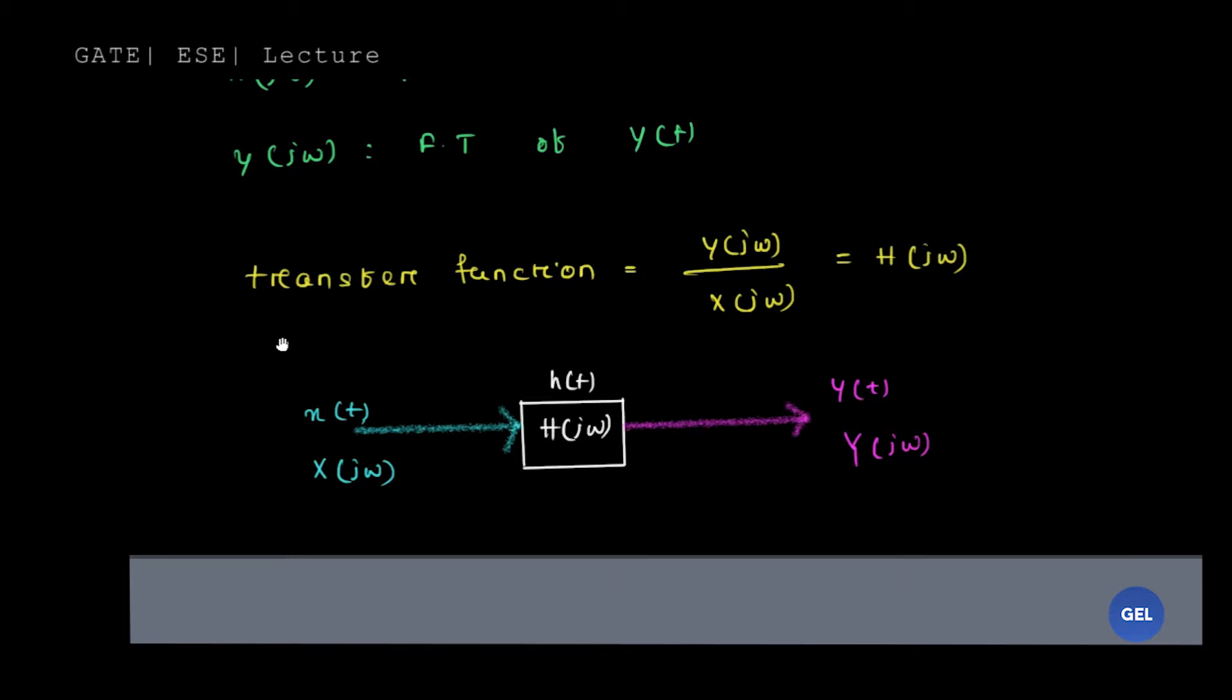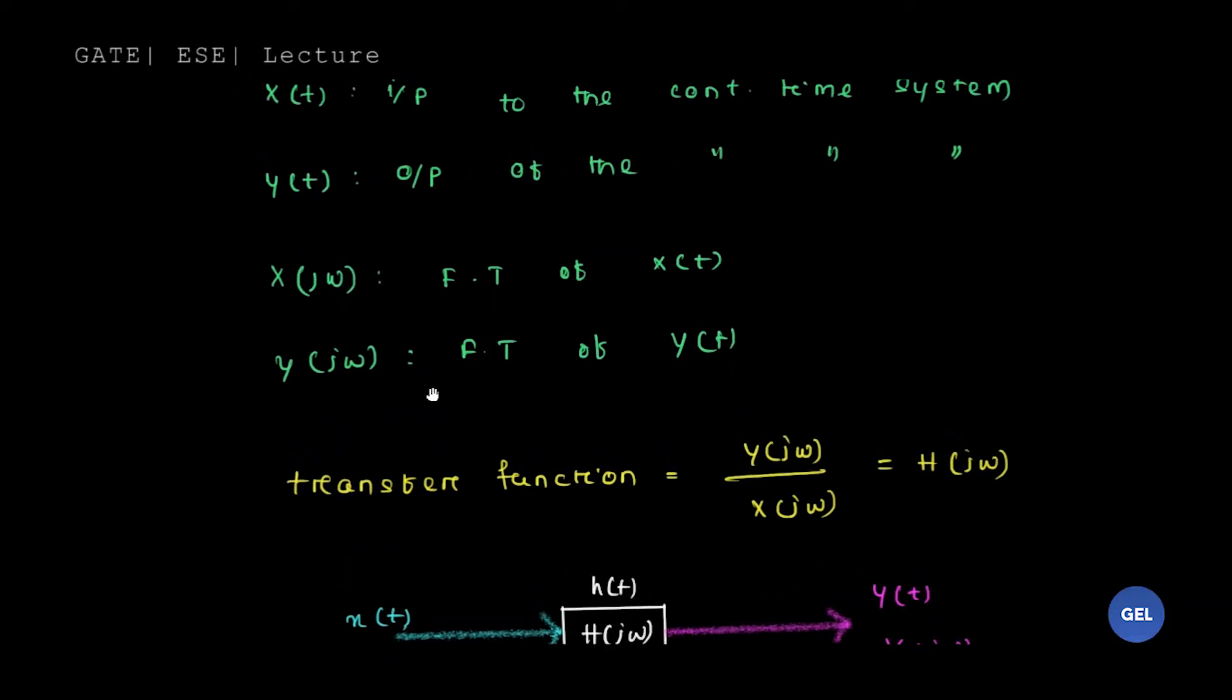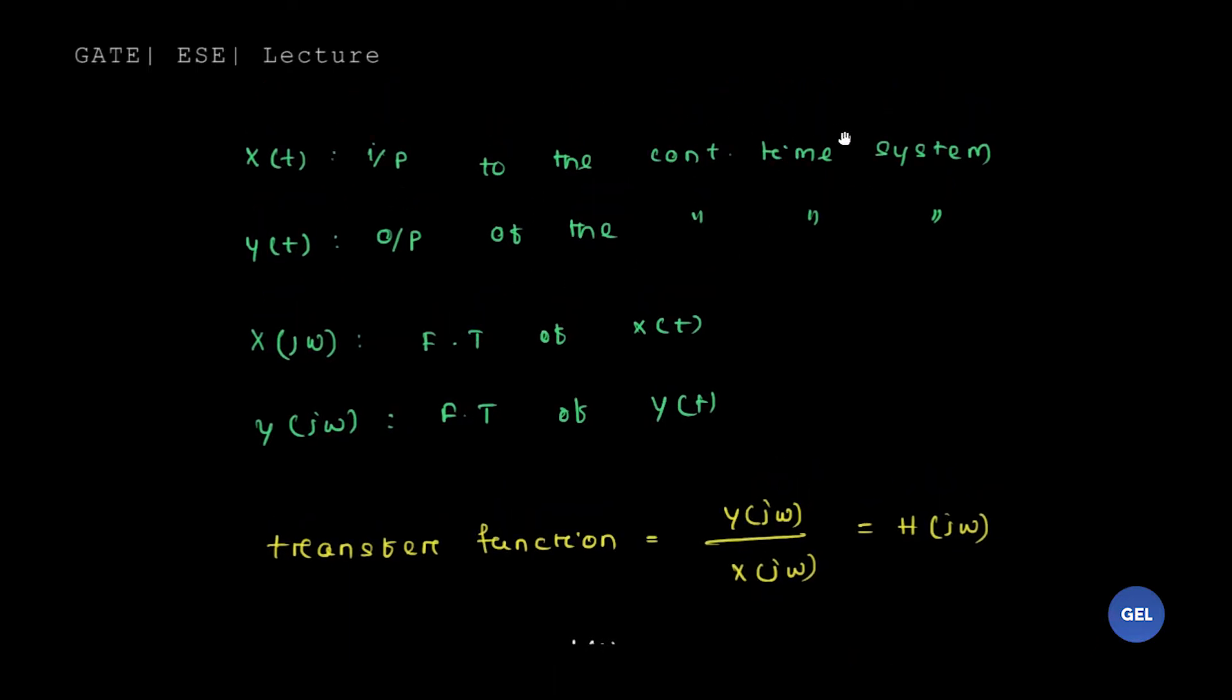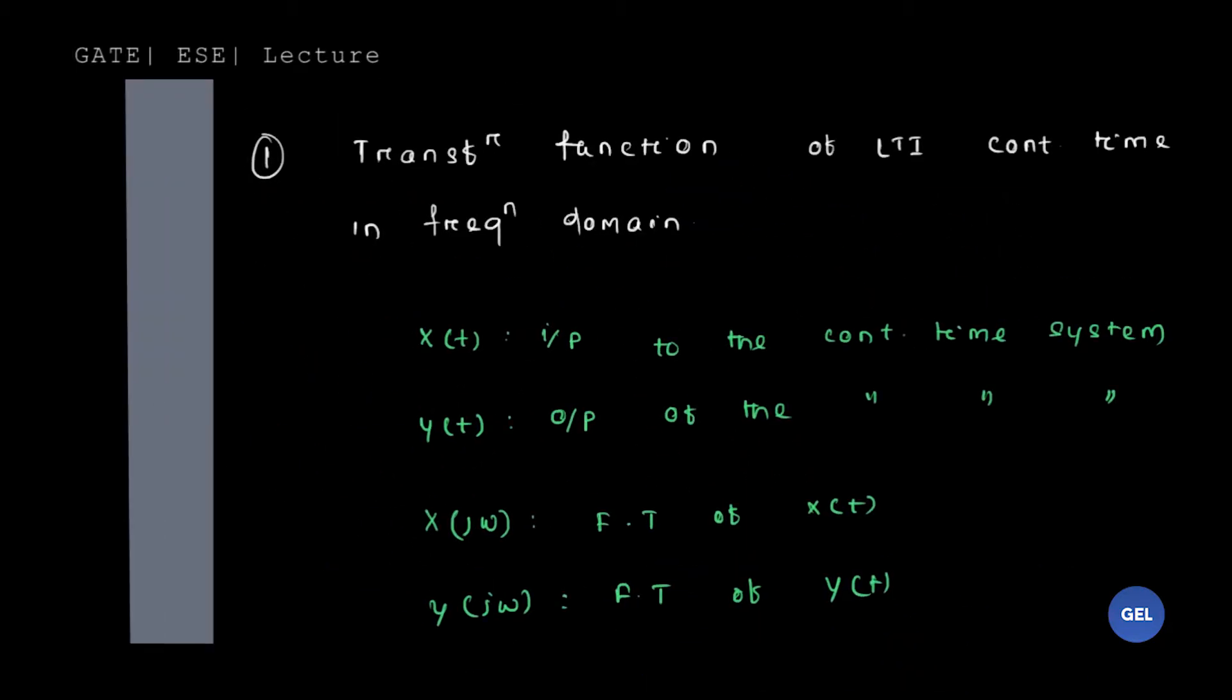So H(jω) is nothing but called the transfer function, which is nothing but Y(jω) divided by X(jω), where X(jω) and Y(jω) are the Fourier transforms of the input to the continuous time system and output of the continuous time system respectively. This is your first point.